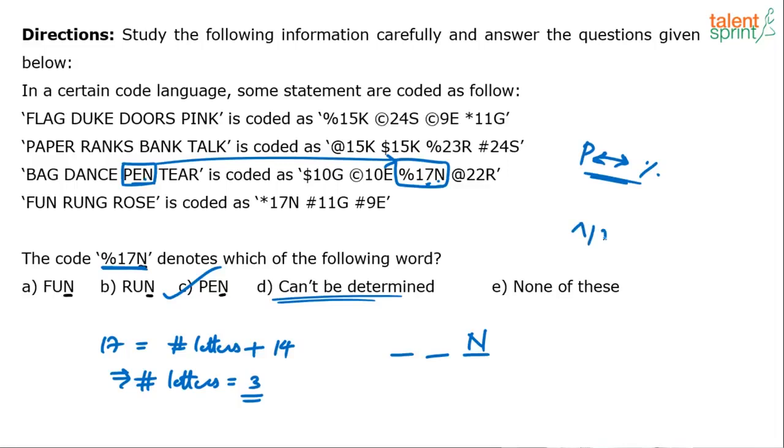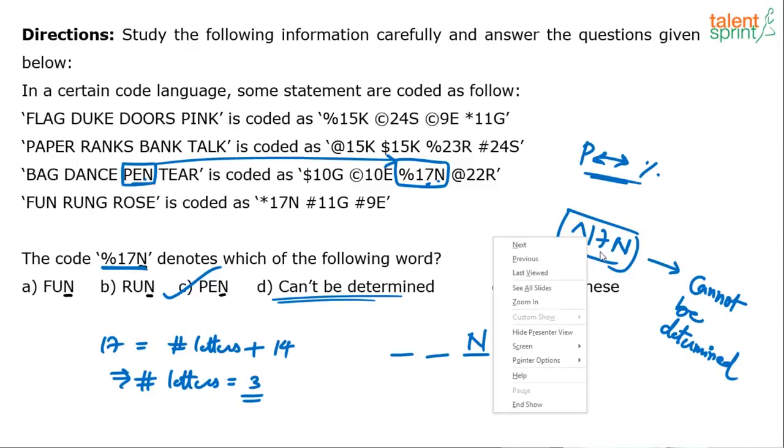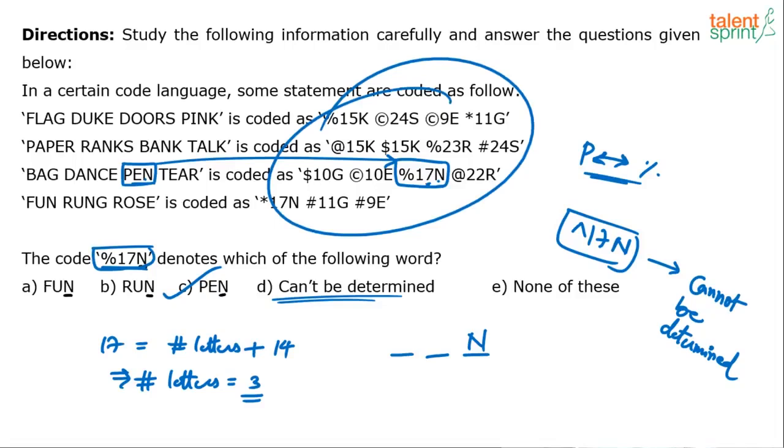But suppose the code is copyright 17N instead. Then what is the answer? Cannot be determined. Here again I can only say that the word will end with N and will have 3 letters because 17 is 14 plus 3. But I do not know what is copyright. If the code does not belong to the set of codes here, answer should be cannot be determined. If it belongs to the set of codes here, then you will try and find it out.